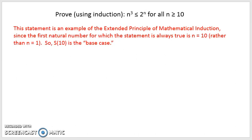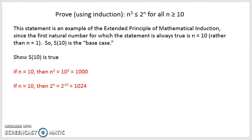Now I want to prove this using induction. This is an example of the extended principle of mathematical induction, because the starting point is 10 — the base case is S of 10 rather than S of 1. The first step is showing S of 10 is true by substituting 10 into each side. If n equals 10, then n cubed equals 1,000. And 2 to the 10 equals 1,024, so n cubed is less than or equal to 2 to the n for n equals 10, which means S of 10 is true.